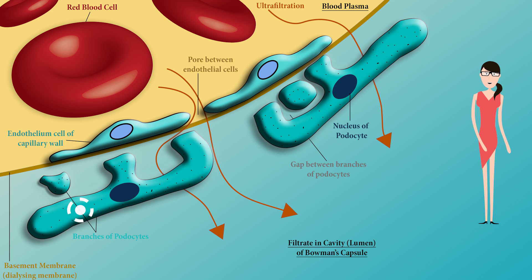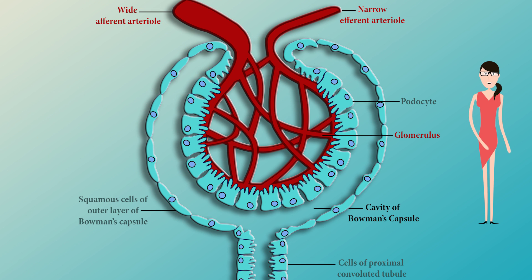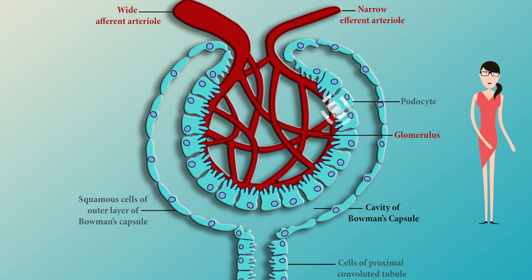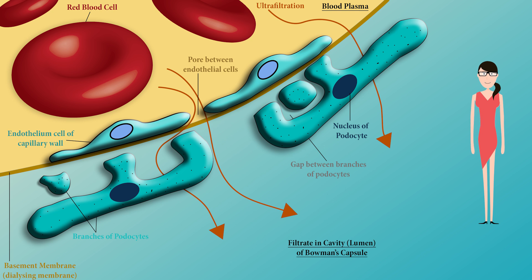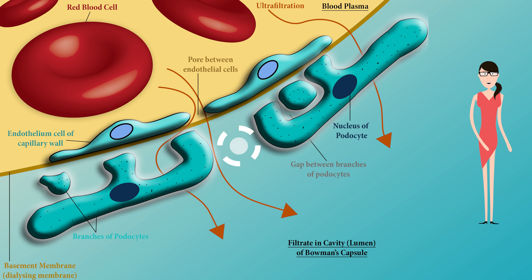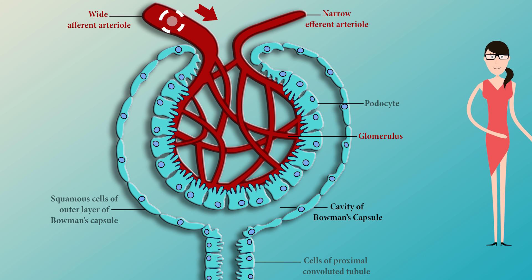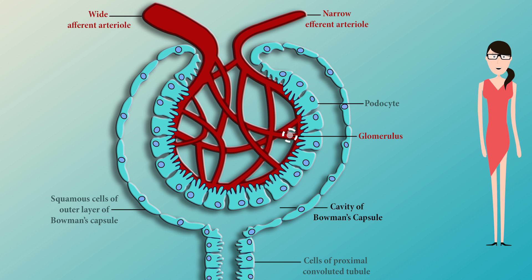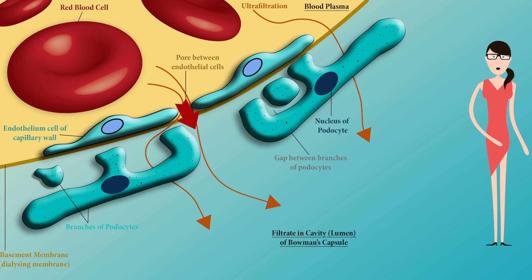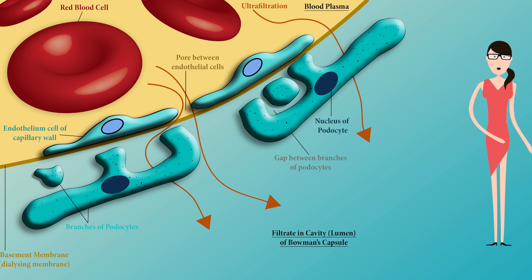The second layer is the inner wall of the Bowman's capsule, made up of podocytes. Lying closely against the endothelium is a basement membrane, and against that is the layer of cells lining the renal capsule, called podocytes. 'Pod' means foot, and these cells have many foot-like extensions projecting from their surface that wrap closely around the capillary loops of the glomerulus. These extensions interlink with those from neighboring cells, fitting together loosely and leaving tiny slits called pores about 25 nanometers wide through which filtered fluid can pass. As blood plasma is forced out through the capillary pores and through the basement membrane, it then passes through the slits between the podocytes.